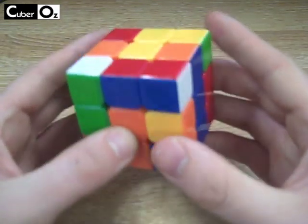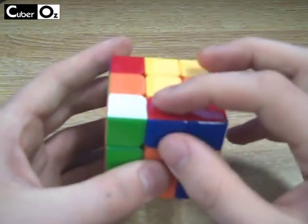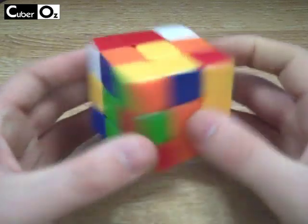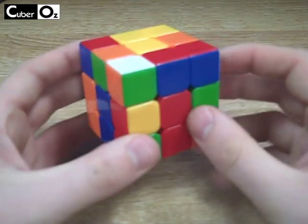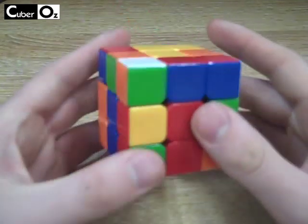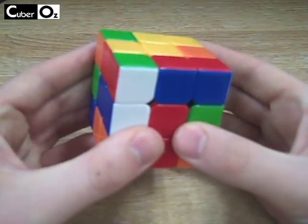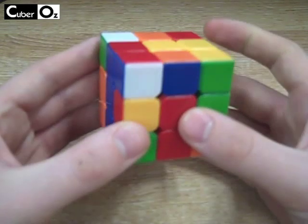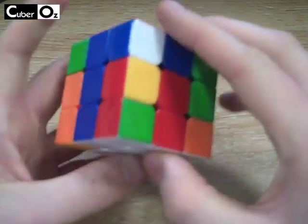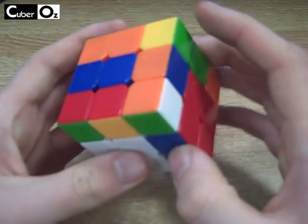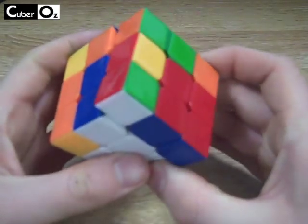The first is when they are already connected at the top and you simply get it next to the slot that it should be in. Open up the slot, put it in and then close again. There is another technique called sledgehammer move whereby you do an F, an R prime, an F prime and an R.